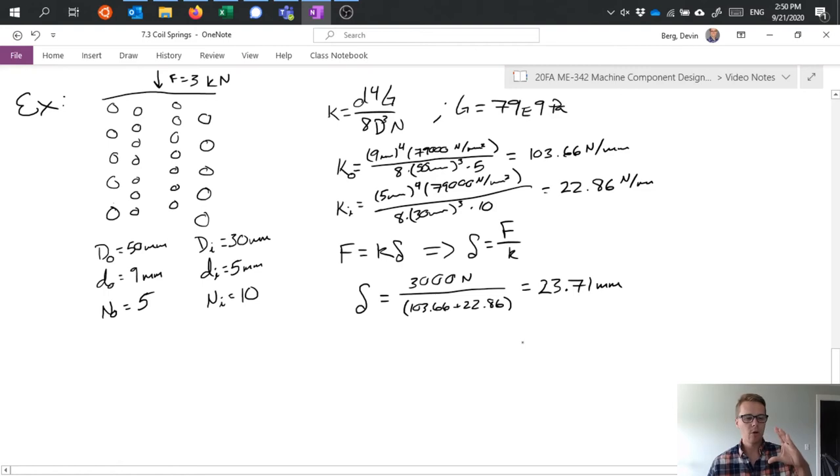Great. So we know, applying this load of three kilonewtons, we're going to compress this by 23.7 millimeters in theory.